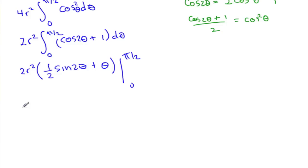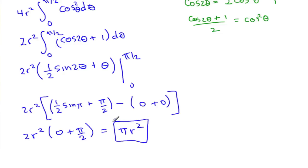Evaluated at those limits, we get 2r squared, 1 half sine 2 theta. Evaluate at pi over 2, we get pi, plus pi over 2, minus, substitute in 0, sine of 0 is 0, so that's 0, and plus 0. So then we have 2r squared, and sine of pi is 0, so this will be 0, plus pi over 2, which equals, and if I cancel those 2's, I get pi r squared, the area of the circle.